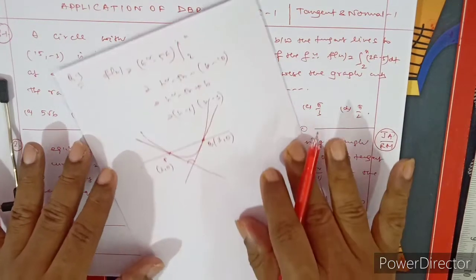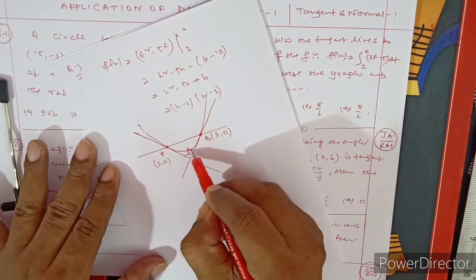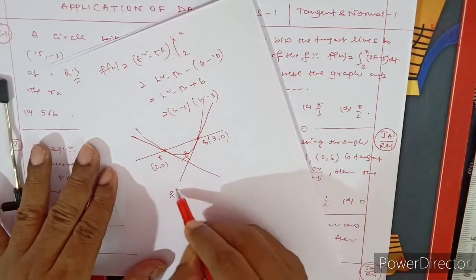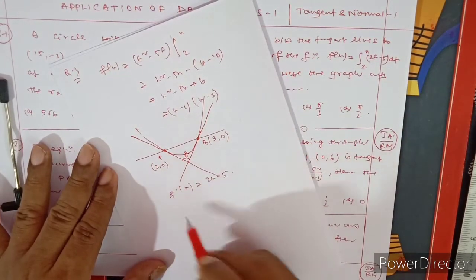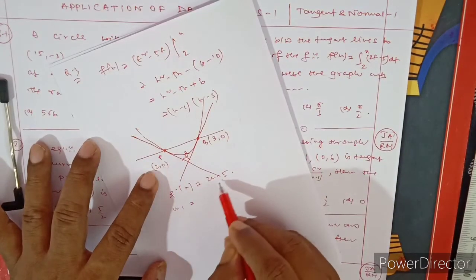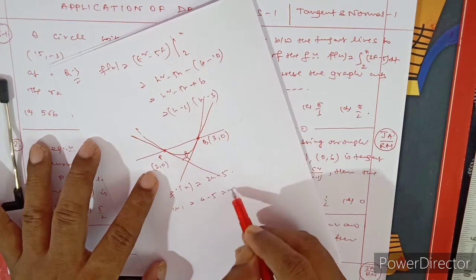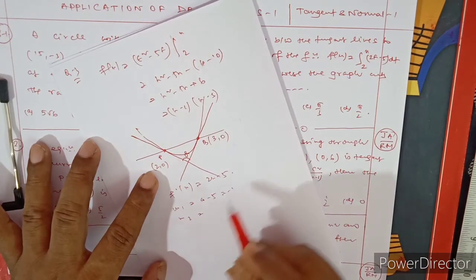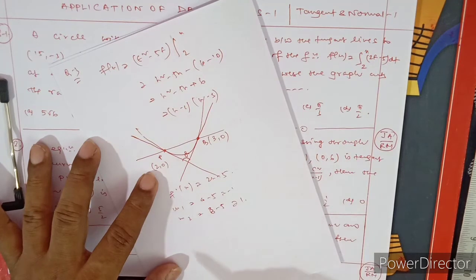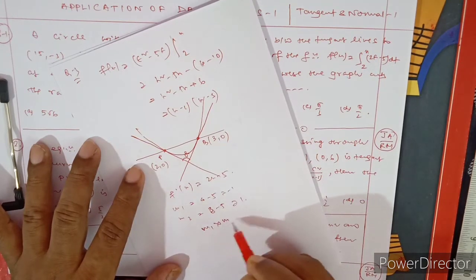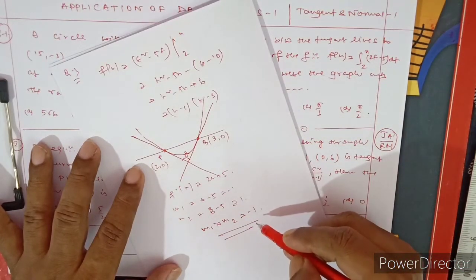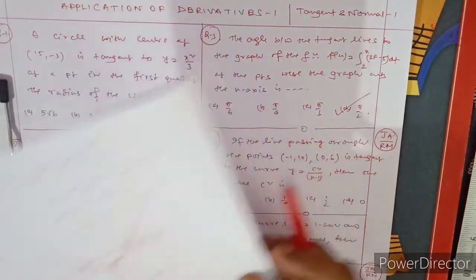At x = 2 (point P) and x = 3 (point Q), we find the tangent slopes. f'(x) = 2x − 5. At P: m₁ = 2(2) − 5 = −1. At Q: m₂ = 2(3) − 5 = 1. Since m₁ × m₂ = −1 × 1 = −1, the tangents are perpendicular, so the angle θ = π/2.